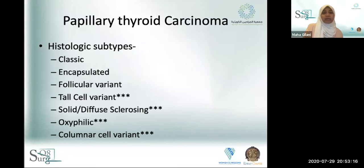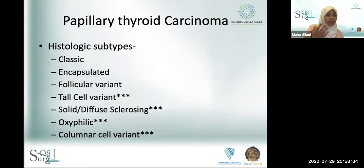There are several histologic subtypes of papillary thyroid carcinoma. The ones marked with asterisks carry a worse prognosis. Papillary thyroid carcinoma has a very good 10- and 20-year survival above 97%, but certain histologic subtypes carry worse prognosis. Most don't affect survival but do affect disease control.